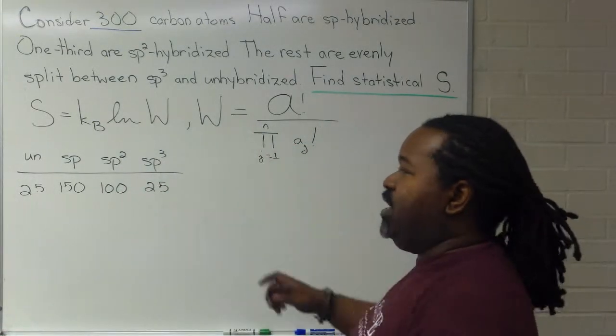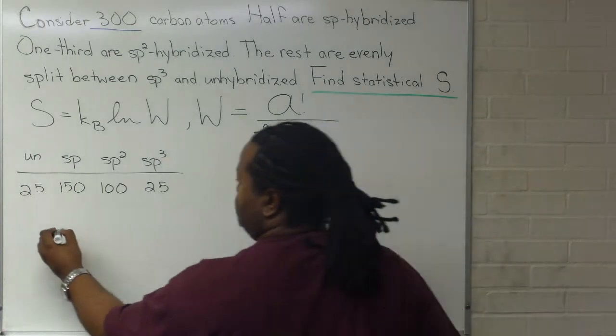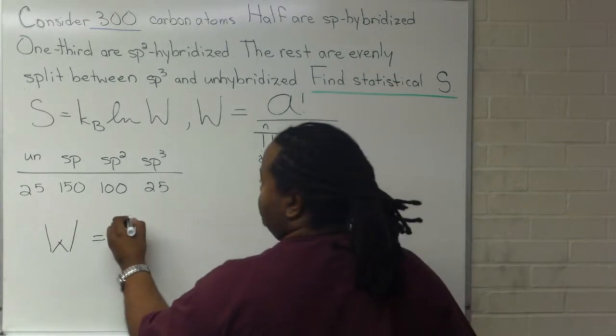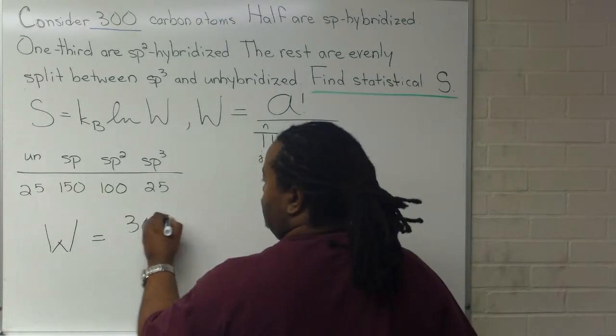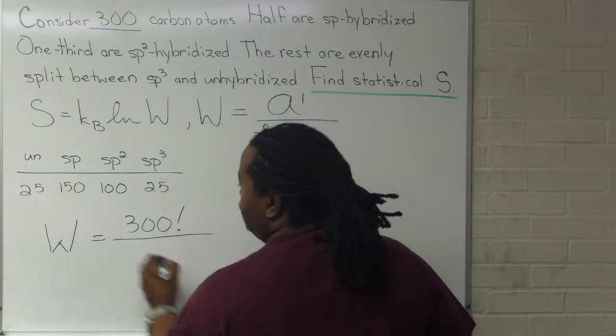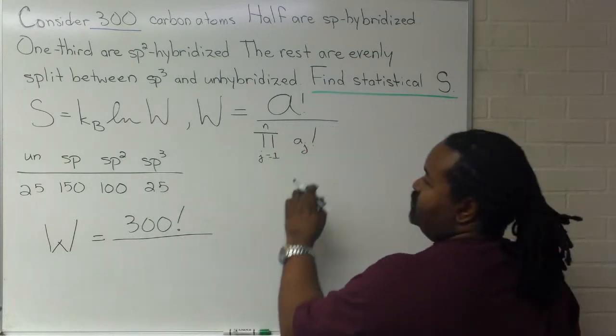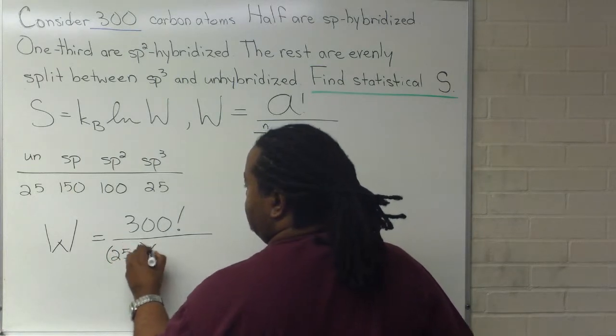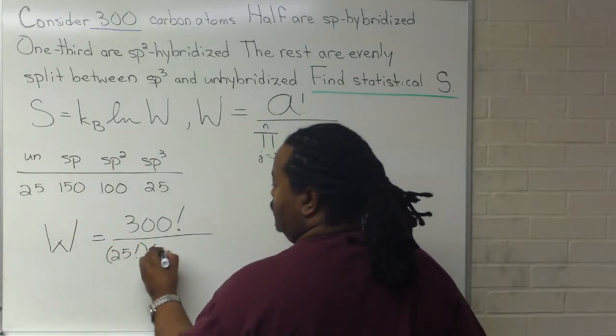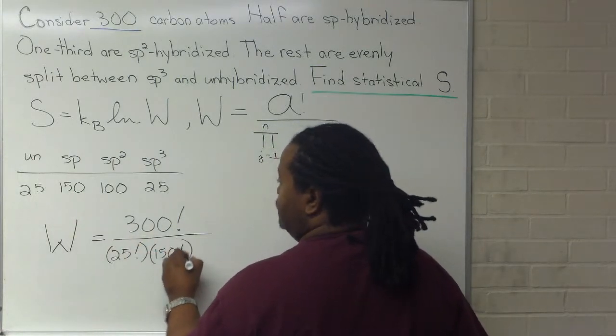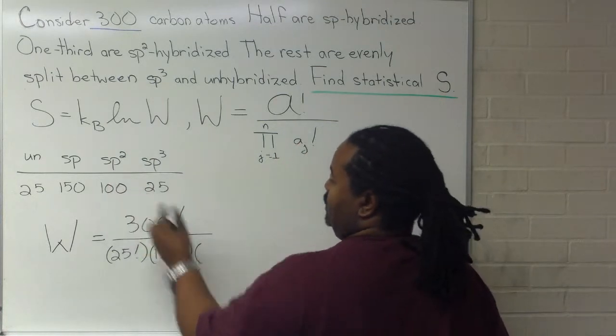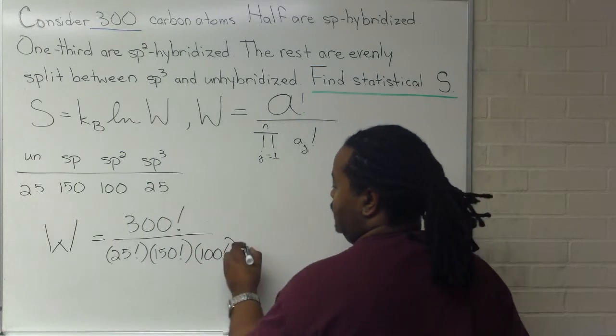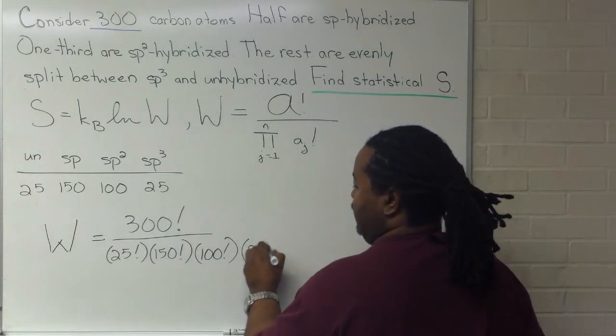And so, in this case, we can now write out the expression for W. The total number of particles is 300, and now we're going to multiply. So, A1 being our unhybridized, that would be 25 factorial. A2, 150 factorial. A3, 100 factorial. And A4, 25 factorial.